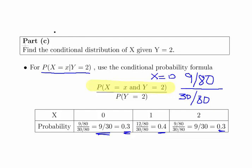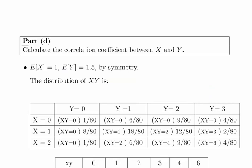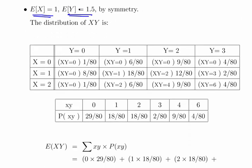Now we need to calculate the correlation coefficient between X and Y. The expected value of X is equal to 1 and the expected value of Y is equal to 1.5. I'll go into these calculations in more detail in other videos. What we have to do here is calculate the distribution of X times Y — the product of X multiplied by Y for each of the possible pairings.